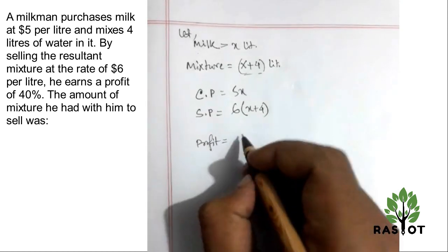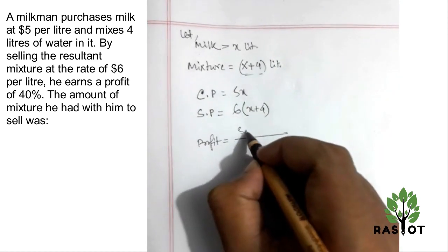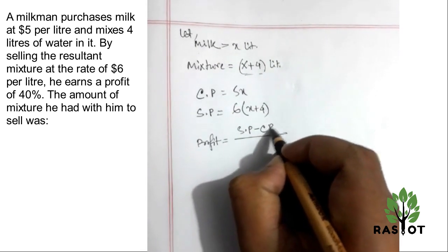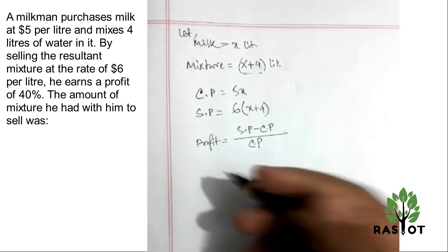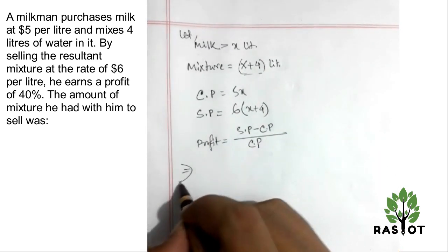We know that profit is equal to selling price minus cost price. And profit is calculated as a percentage of cost price, so profit divided by cost price.